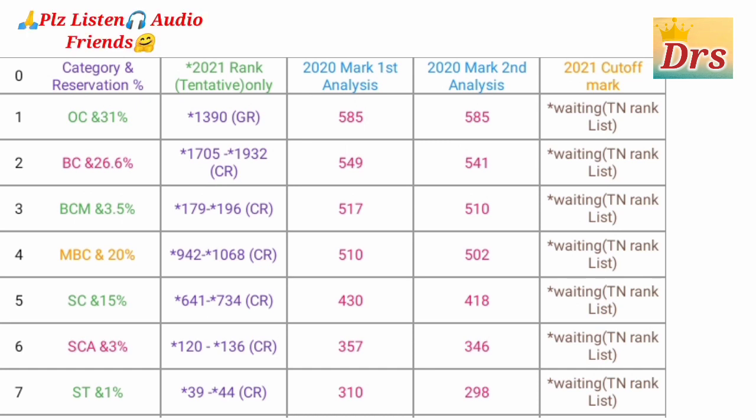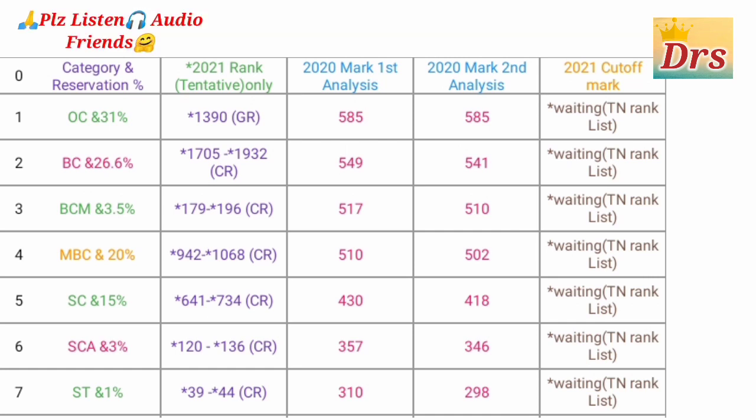Let's look at the details. First is the OC category. If you have a community rank, if you have a general rank, if you have an A333. Next is BC category. If you have an OC category, there is a doubt.